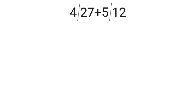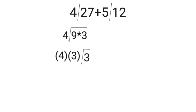For number 4, we have 4 square root of 27 plus 5 square root of 12. They don't have the same radicand, but they have the same index. So we find factors where one factor is a perfect square. The factors of 27 are 9 times 3, so the square root of 9 is 3. We multiply 4 times 3 to get 12, giving us 12 square root of 3. For 5 square root of 12, the factors of 12 are 4 times 3, and the square root of 4 is 2. So 2 times 5 gives 10 square root of 3.